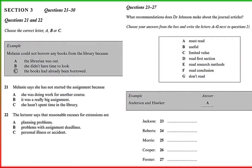The article by Anderson and Hawker is really worth reading. You should also read the article by Jackson, but just look at the part on the research methodology — how they did it. And if you have time, the one by Roberts says very relevant things, although it's not essential. The one by Morris — I wouldn't bother with that at this stage.